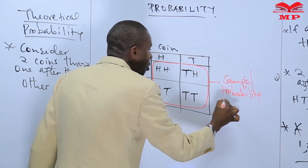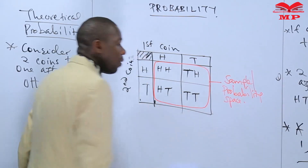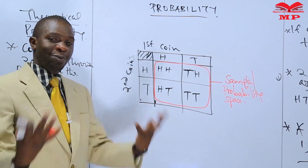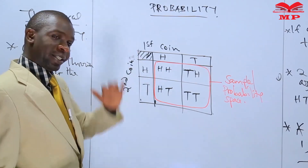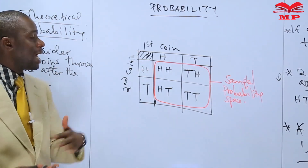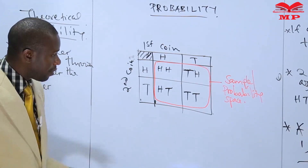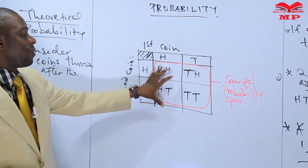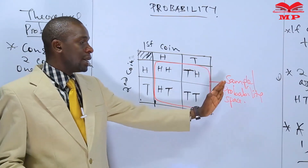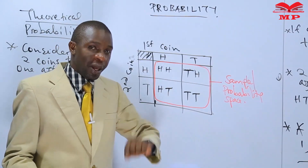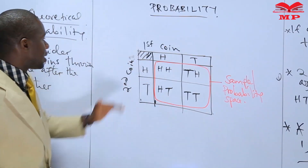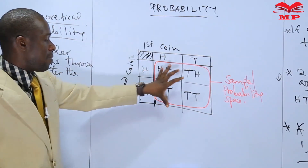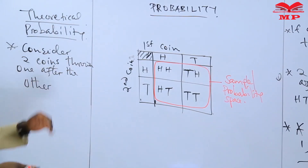We've come up with this total number of likely outcomes without doing any experiments, because we expect that when we throw a coin there are only two chances — either a head or a tail. We don't have to do an experiment for this. When you can find a probability without doing an experiment or having experience, that is what we are calling theoretical probability.